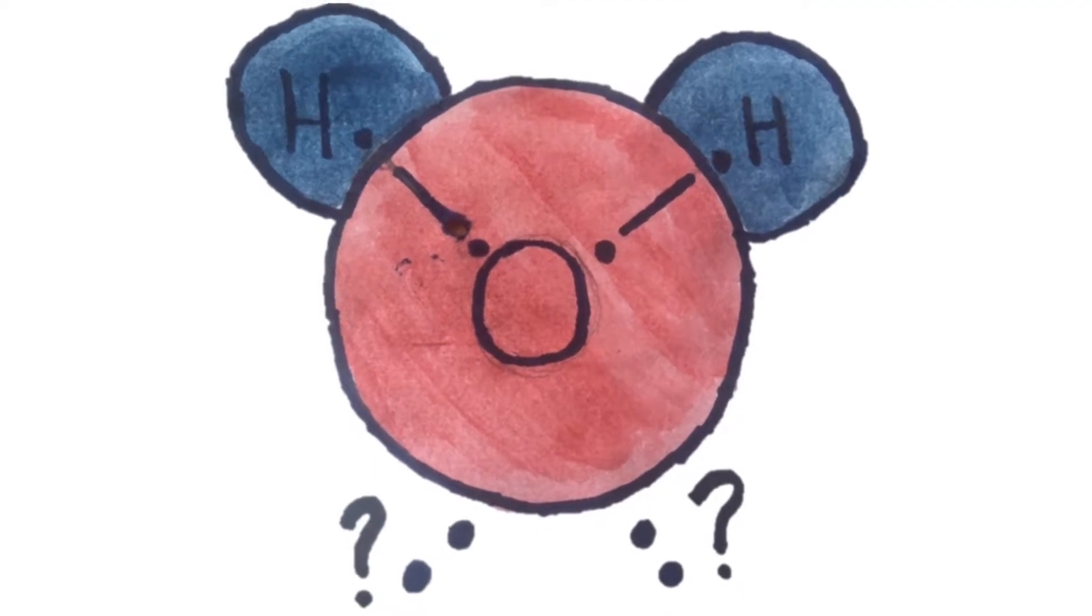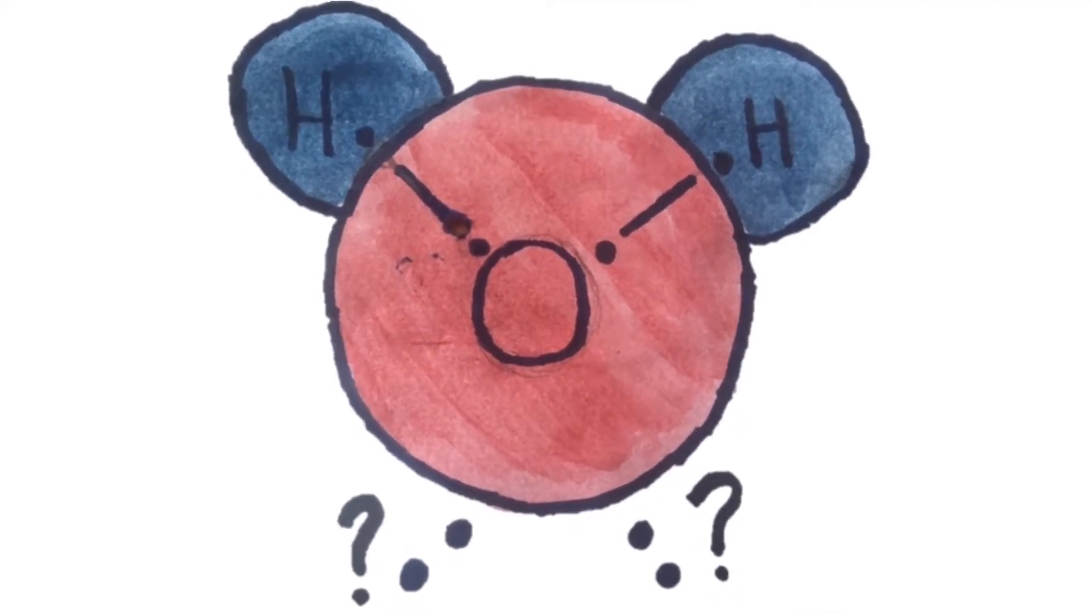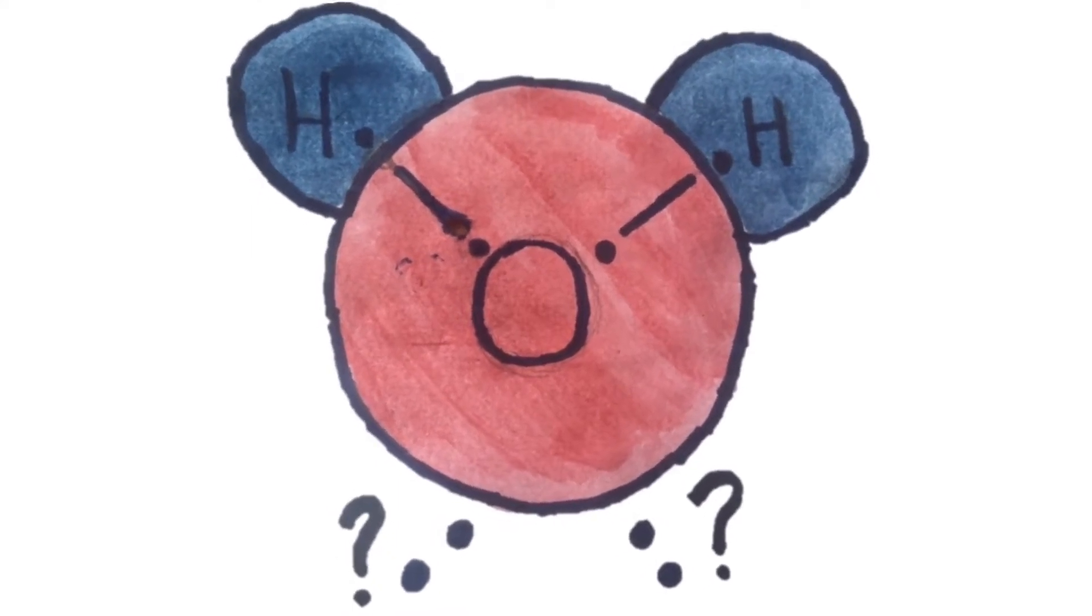However, oxygen has a total of six electrons and after sharing two of them with hydrogen, it will have an extra four electrons left unbound. So what happens to them?